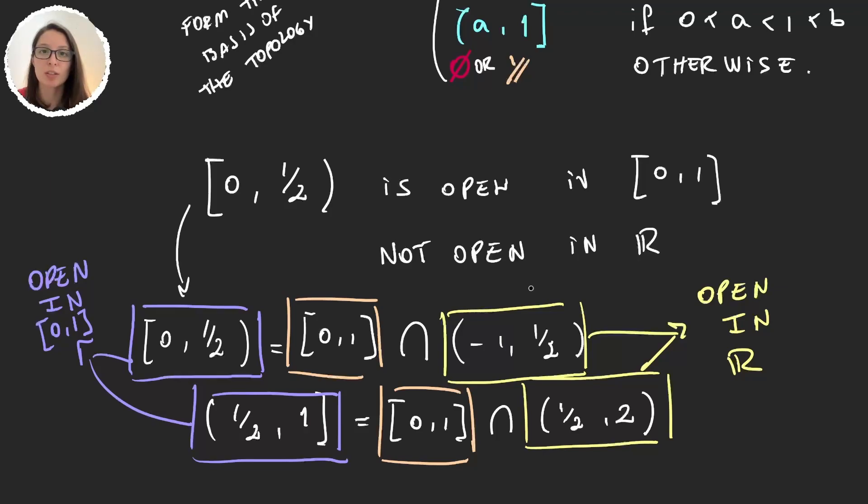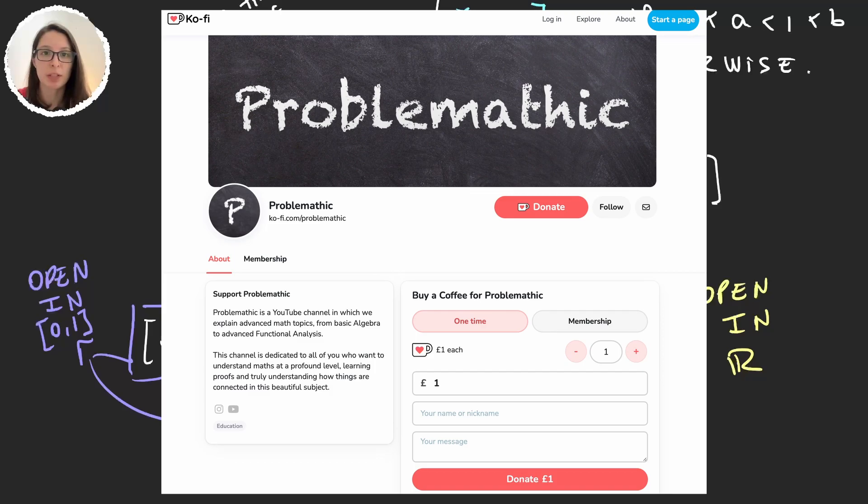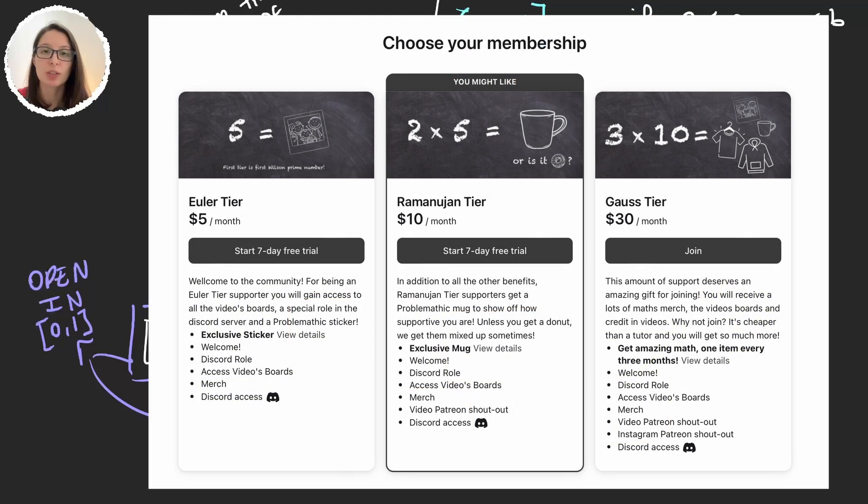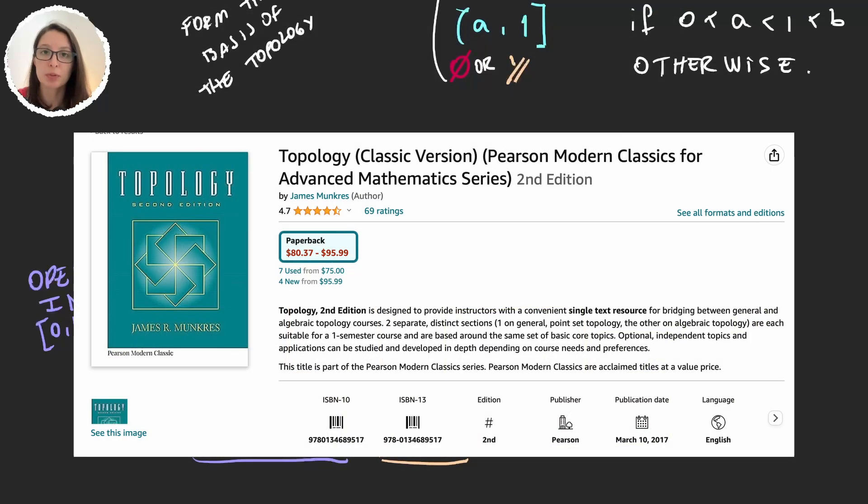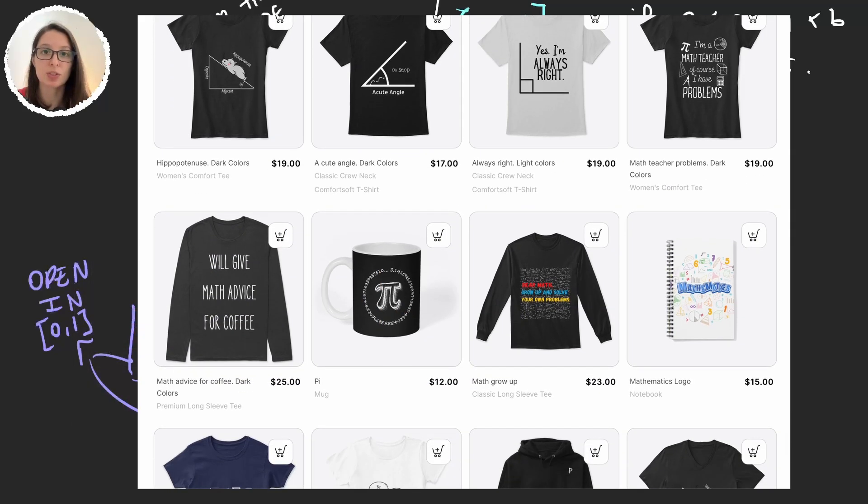Remember that if you want to support the channel, you have different ways to do so. All the links are in the description of the video. You can either leave small donations on Ko-fi, join us on Patreon, buy books on Amazon, or buy t-shirts in our store.